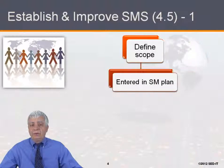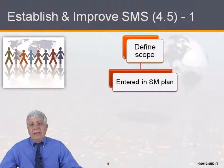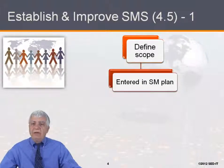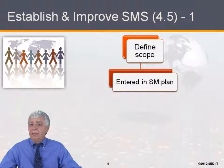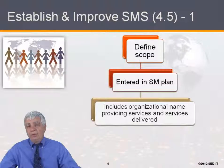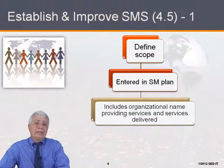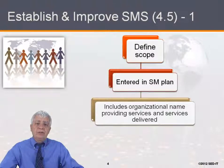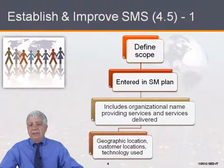For example, you may say we're going to provide to customer number one — because that's the name of the customer — a series of services which are going to be written in a service agreement. Something of a simple text, and this is something that you would need to decide at the beginning before you start doing your plan. Once the scope is defined, you would enter the service management plan based on that scope, and then you would include the organizational name providing services and services delivered, so that at the end you would have a sentence or a very small paragraph that would define the scope and the area of your plan.